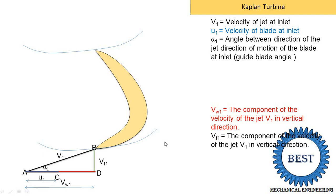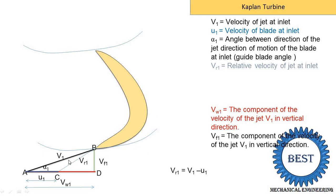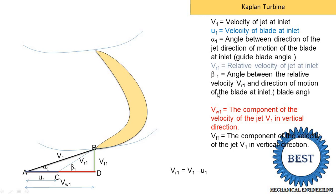Now we need to indicate the relative velocity. Relative velocity means with respect to another — it is the difference of two velocities. The equation is: relative velocity Vr1 equals V1 minus u1. We connect the end of the V1 velocity and the end of u1 velocity, and that line is indicated as relative velocity Vr1 — the relative velocity of the jet at inlet with respect to the blade velocity. The angle of relative velocity is beta1, which is the angle between Vr1 and the horizontal direction — also known as the runner blade angle at inlet. This completes the inlet velocity triangle.